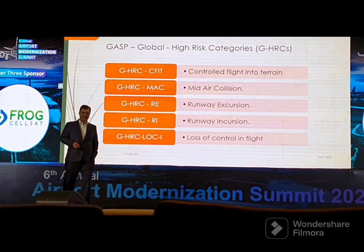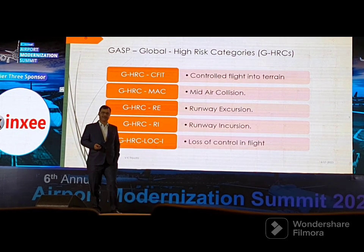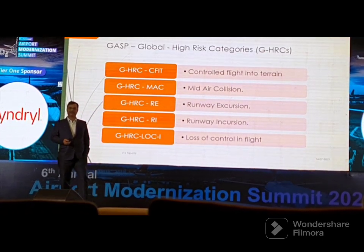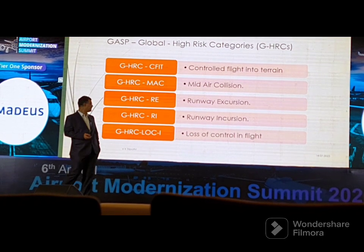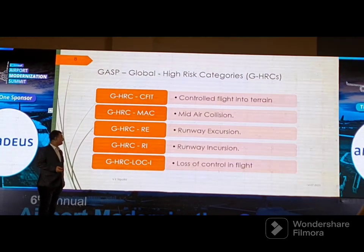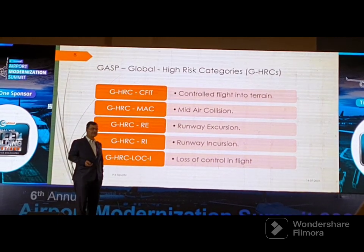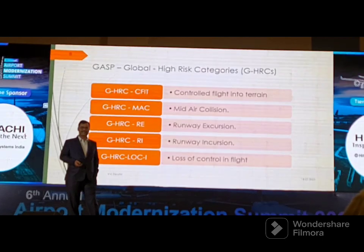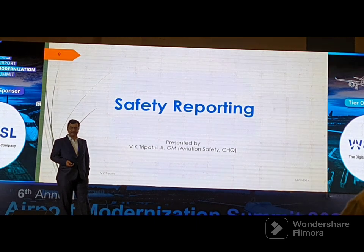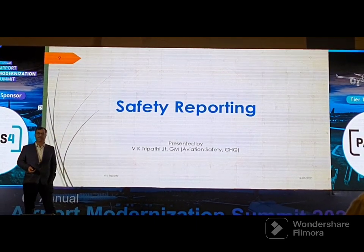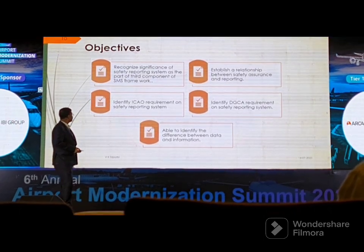ICAO has specified five High-Risk Categories. Those who are active at airports or operational sites should be aware of them. Two key ones are runway excursion and loss of control in flight. These high-risk categories must be monitored by every operator working at the airport. Moving to the second point: safety reporting.